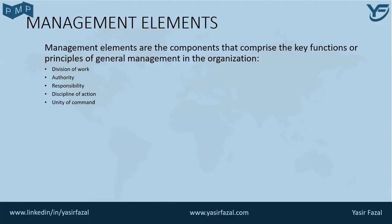Unity of command — for example, only one person gives orders for any action or activity to an individual. Unity of direction means one plan and one head for a group of activities with the same objective. Then general goals of the organization take precedence over individual goals, and employees should be paid fairly for the work performed.